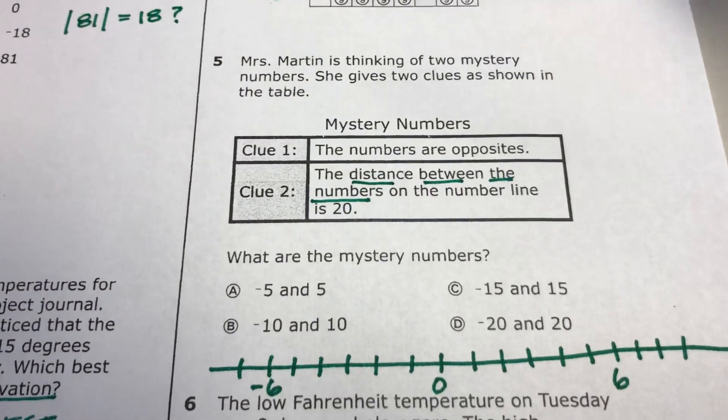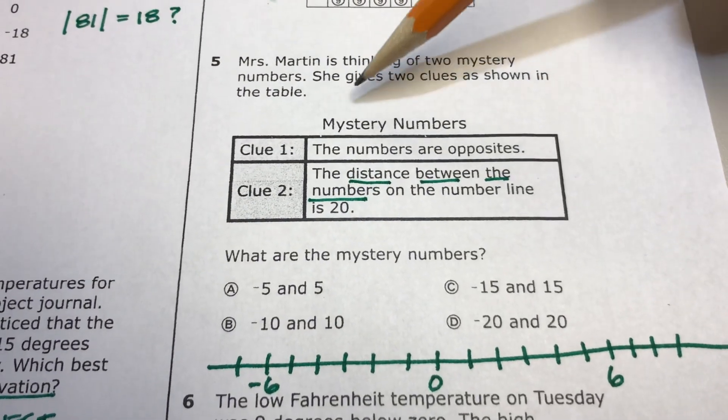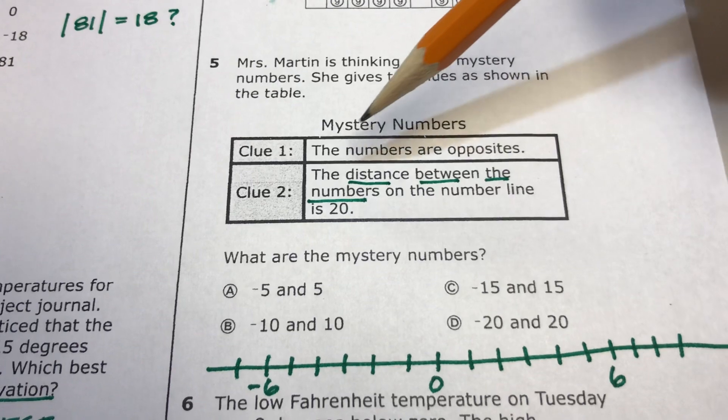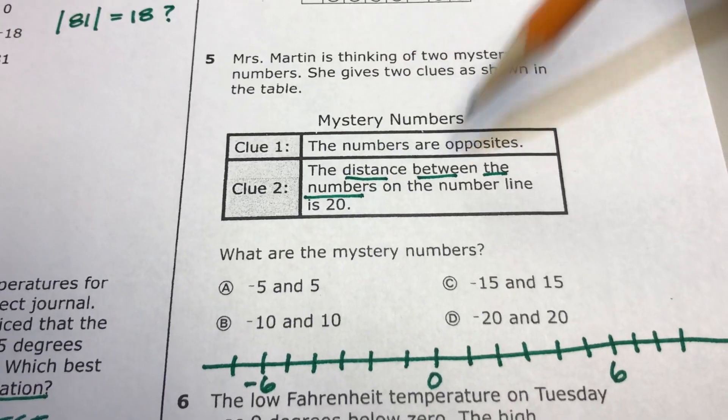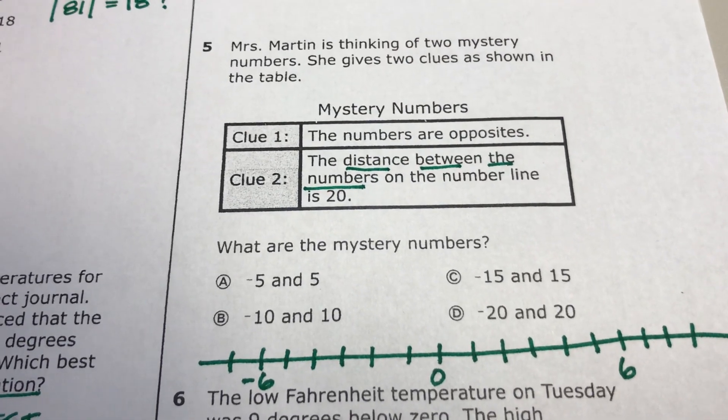A question on number five about this mystery number. They gave you some clues about the mystery number. The first clue is that the numbers are opposites. You know what opposites mean? We've talked about that a lot this week.